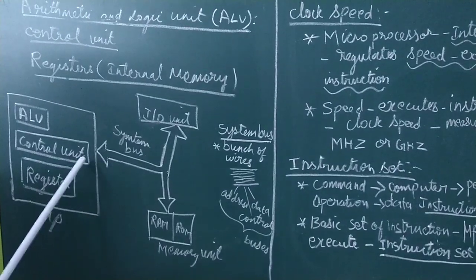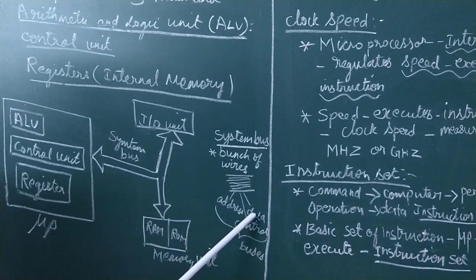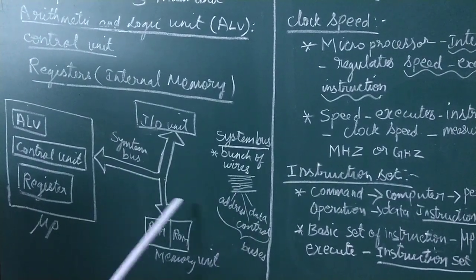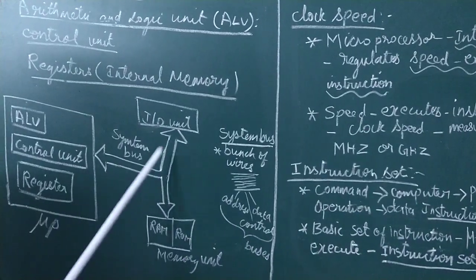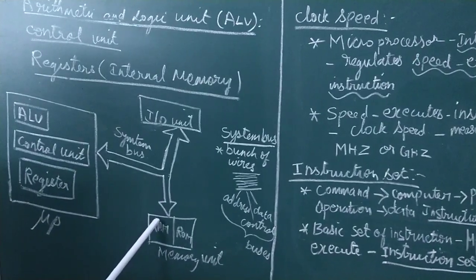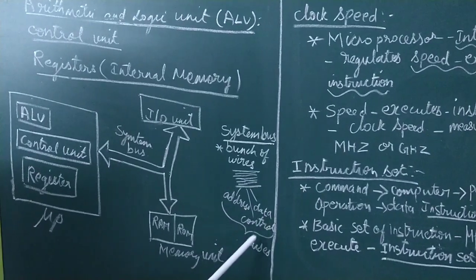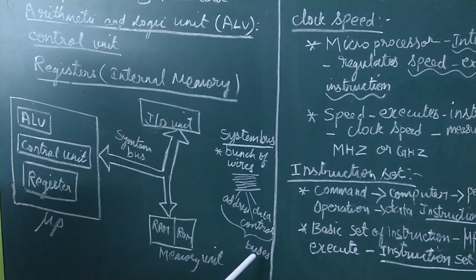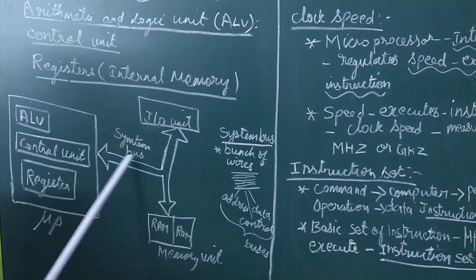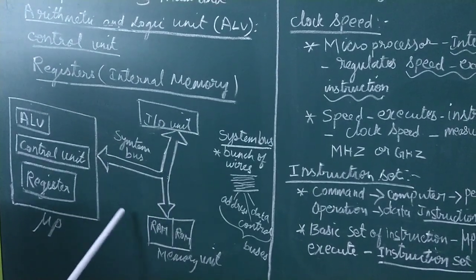The address bus carries address information, including instruction addresses. The data bus carries data. The control unit uses the control bus. The control bus is used to control all other units of the computer.